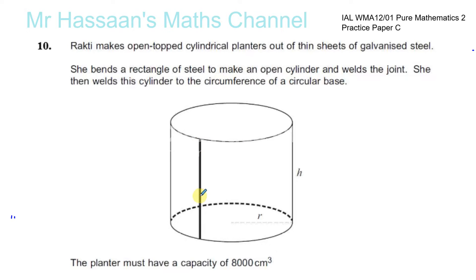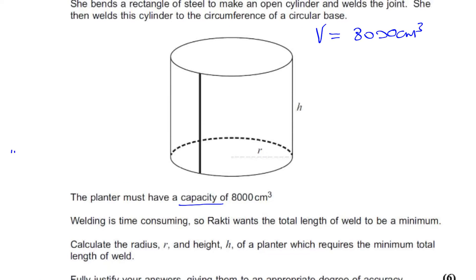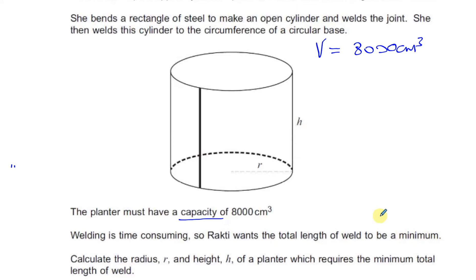There's welding at the joint when she makes the sheet into a cylinder, and welding all the way around the base to make it stick. The planter must have a capacity of 8,000 centimeters cubed — that means a volume of 8,000 cm³. Welding is time-consuming, so Rakti wants the total length of weld to be a minimum. When you see the word minimum in this kind of question, you're straight away thinking about differentiation.